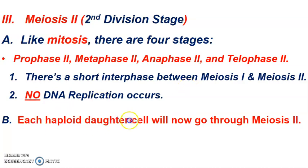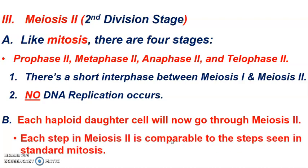Each haploid daughter cell produced in meiosis I is going to undergo meiosis II, so we're going to see two cells going through meiosis II at the same time. As far as how the steps look and how the chromosomes move, meiosis II is going to look almost identical to how the chromosomes move, line up, and separate during mitosis, and you'll see that here in a moment.